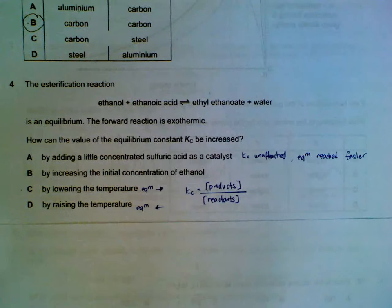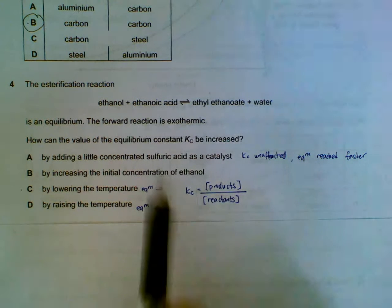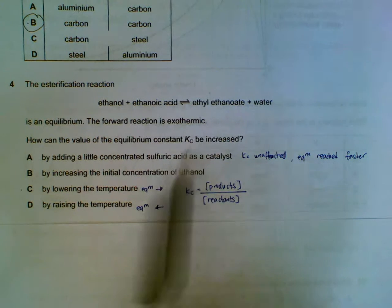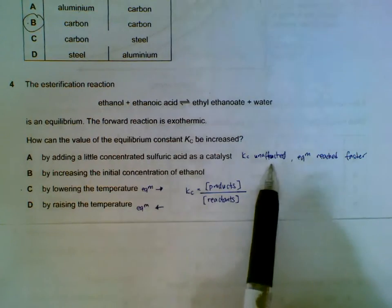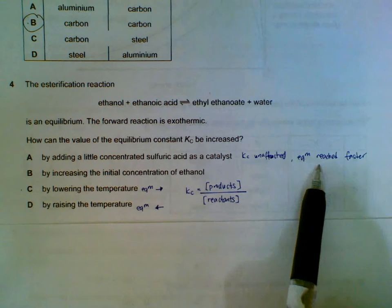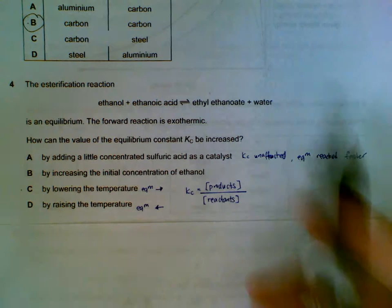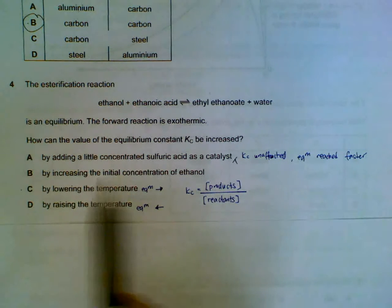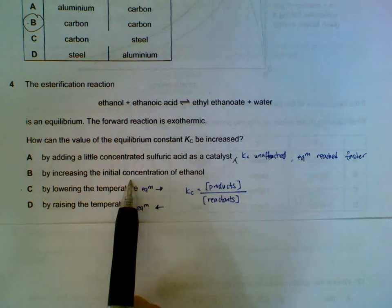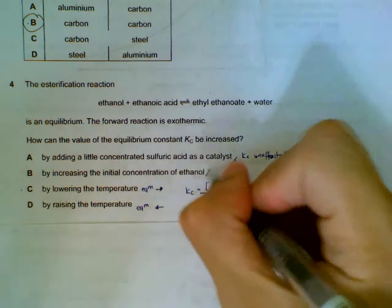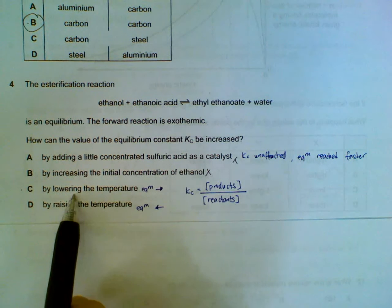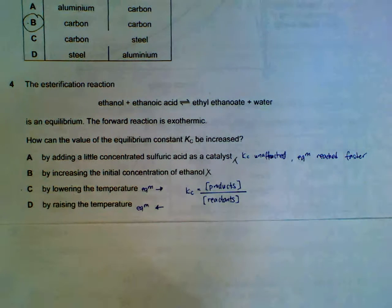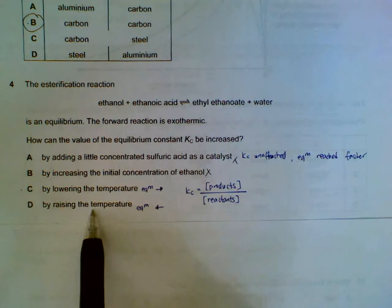Number four, how can we change the value of the equilibrium constant? Adding concentrated sulfuric acid as catalyst, the catalyst will not affect the Kc. It will just allow the equilibrium to be reached faster. Increasing the initial concentration. Changing the concentration will not change the Kc also. It will just shift the equilibrium to the left or to the right. Lowering the temperature. Temperature affects Kc. So we have to check both options C and D.